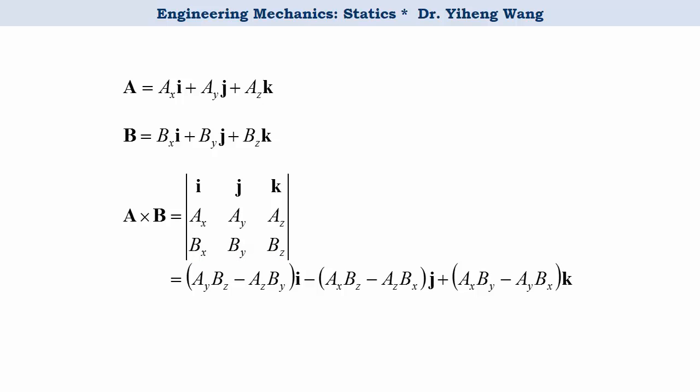Then the cross product equals A_y times B_z minus A_z times B_y times i minus A_x times B_z minus A_z times B_x times j and lastly plus A_x times B_y minus A_y times B_x times k.